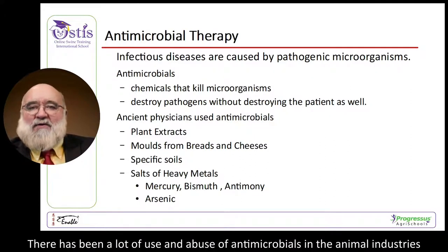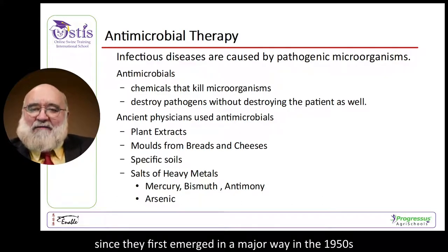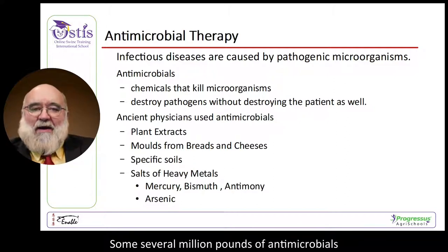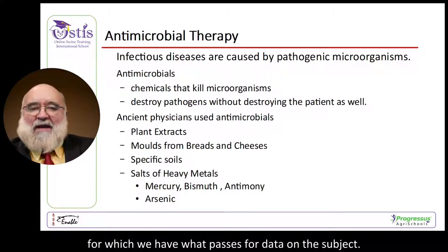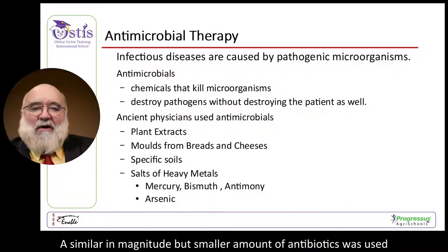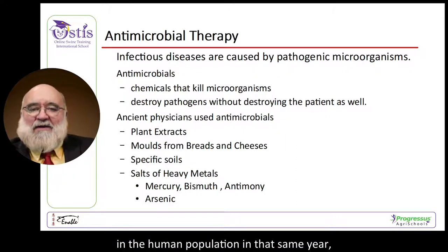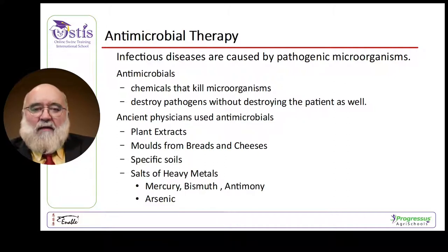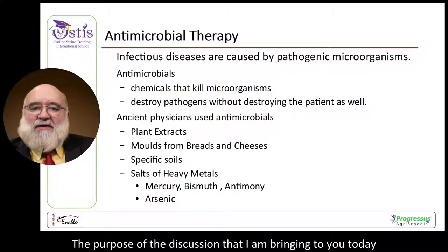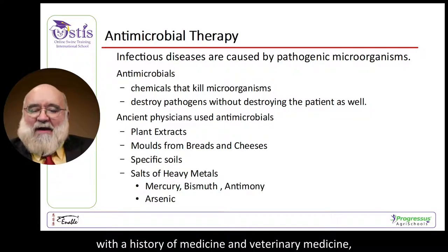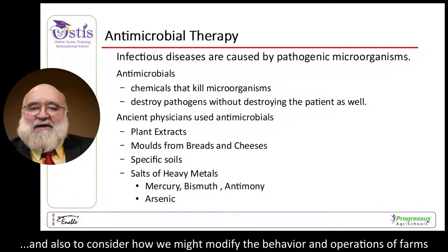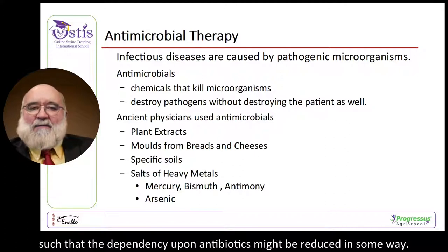There has been a lot of use and abuse of antimicrobials in the animal industries since they first emerged in a major way in the 1950s. Several million pounds of antimicrobials were administered to animals in the most recent year for which we have data, and a similar but smaller amount was used in the human population that same year. The purpose of today's discussion is to look at the history of antibiotics, entangled with the history of medicine and veterinary medicine, and to consider how we might modify farm operations to reduce dependency upon antibiotics.